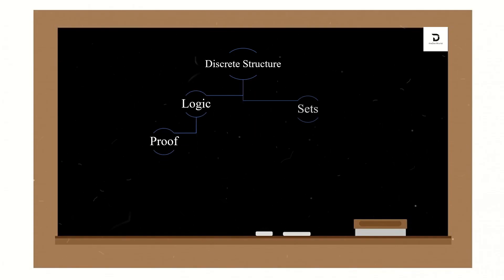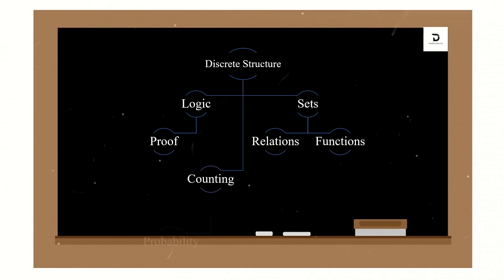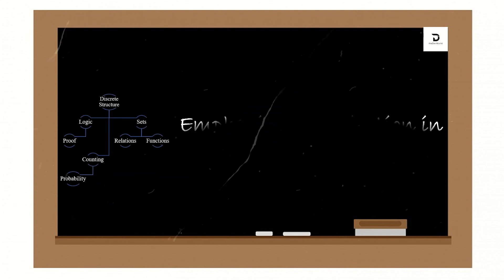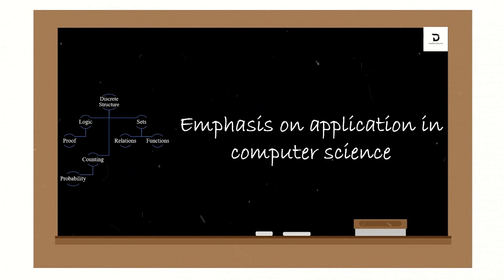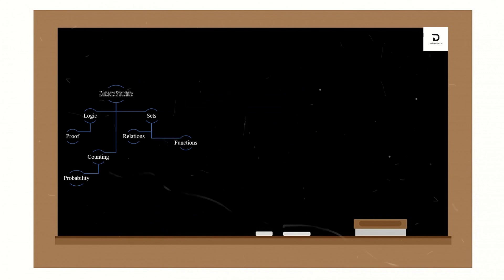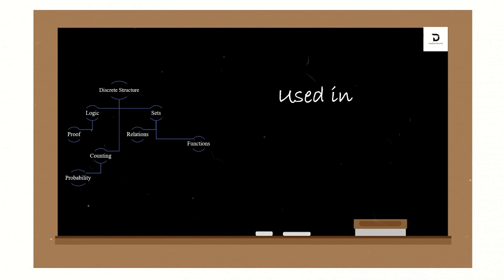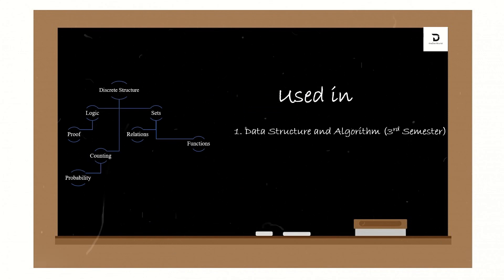First up we have the subject Discrete Structure, or simply DS. This course covers the fundamentals of discrete structures like logic, proof, sets, relations, functions, counting, and probability, with an emphasis on application in computer science. This subject is very essential considering most of the concepts will be used in subjects like Data Structures and Algorithms and Artificial Intelligence later on in the third and fourth semester. These are the units that you will be studying in this subject.